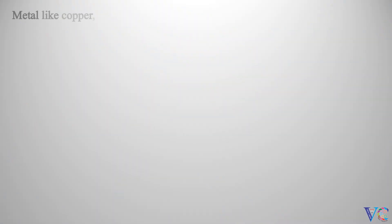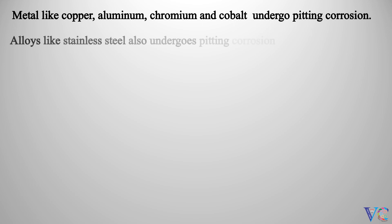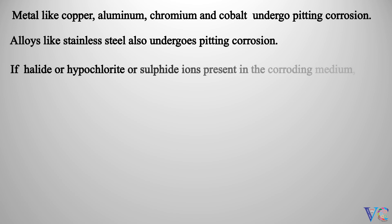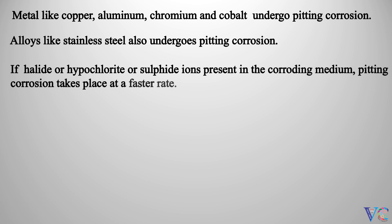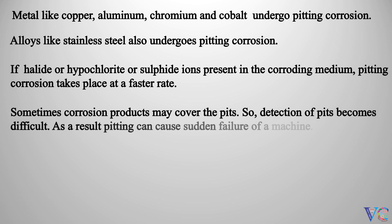Metals like copper, aluminum, chromium, and cobalt undergo pitting corrosion. Alloys like stainless steel also undergo pitting corrosion. If halide, hypochloride, or sulfide ions are present in the corroding medium, pitting corrosion takes place at a faster rate. Sometimes corrosion products may cover the pits, so detection of pits becomes difficult. As a result, pitting can cause sudden failure of a machine. In fact, pitting corrosion is more dangerous than uniform corrosion.